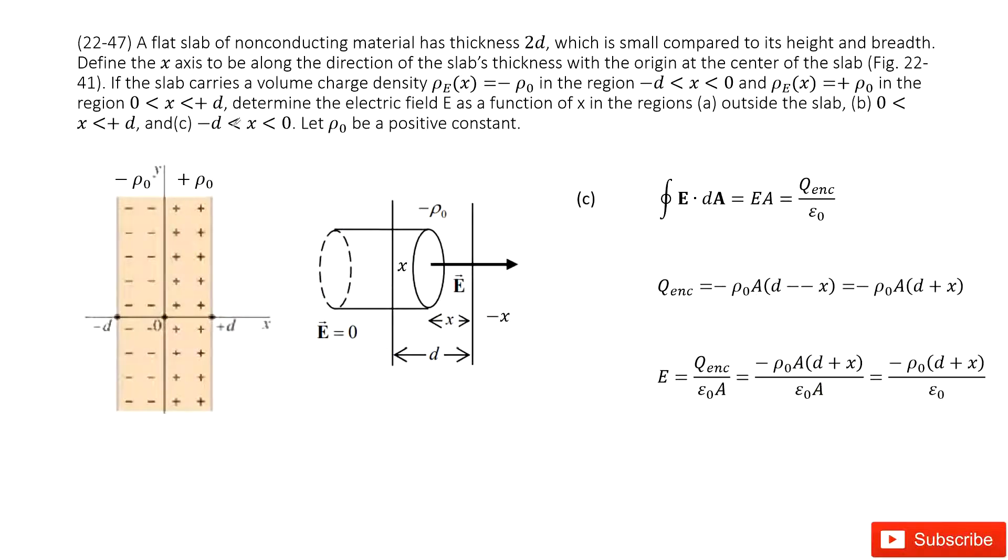The next part, we need to determine when x is larger than negative d and smaller than 0. We must pay attention: this x is negative. Then, we still draw a Gaussian surface, look like this one.